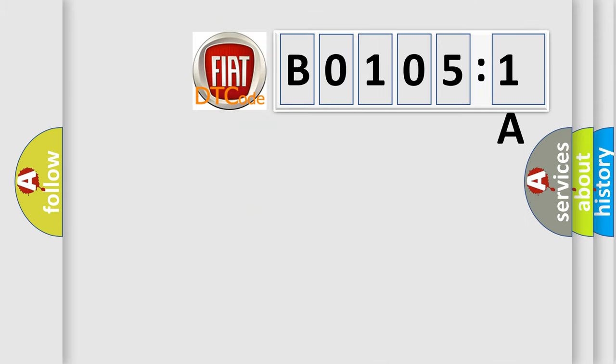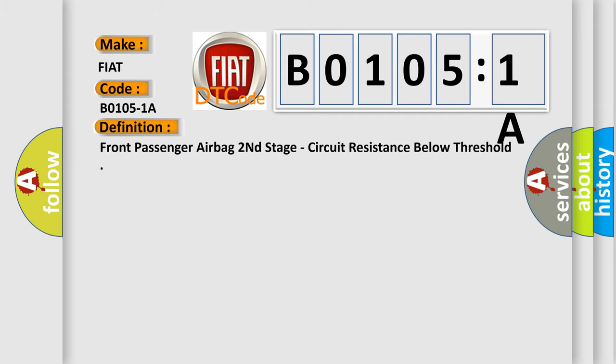So, what does the diagnostic trouble code B01051A interpret specifically for Fiat car manufacturers? The basic definition is front passenger airbag second stage, circuit resistance below threshold. And now this is a short description of this DTC code.